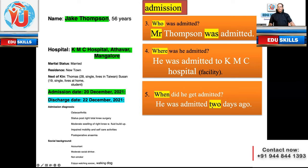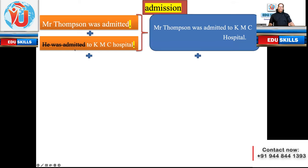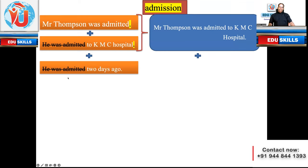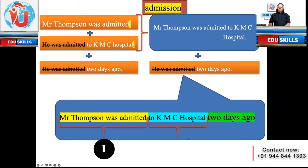Now we have to combine these case notes into one sentence. 'Mr. Thompson was admitted' plus 'he was admitted to CAMC Hospital' becomes: 'Mr. Thompson was admitted to CAMC Hospital.' Then we add 'two days ago': 'Mr. Thompson was admitted to CAMC Hospital two days ago.' All three simple sentences are combined into one single sentence. This is how beginners should start — with small, simple sentences, then combine step by step.